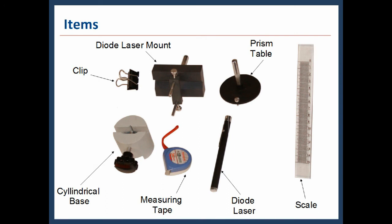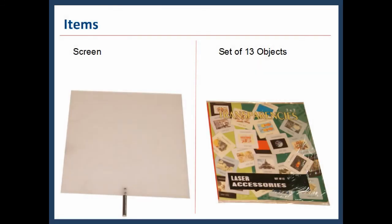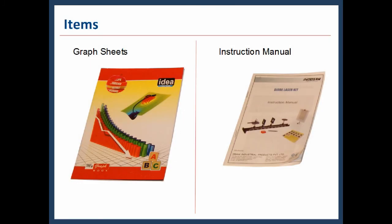The other items are one clip, one diode laser mount, one prism table, one cylindrical base, one measuring tape, one diode laser, and one scale. One screen and a set of 13 objects are also provided. A set of graph sheets and an instruction manual is also provided.